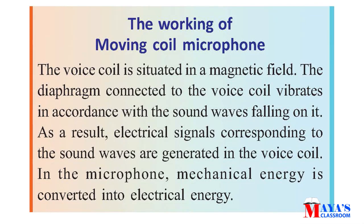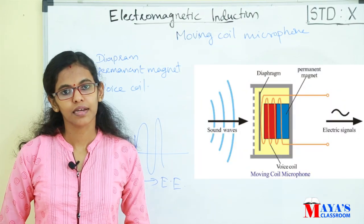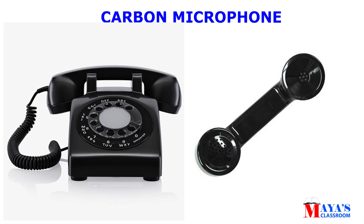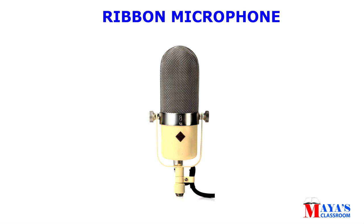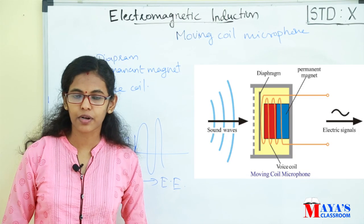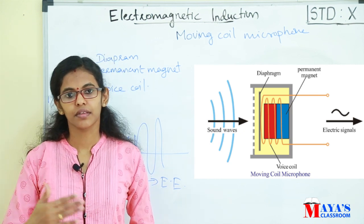Moving coil microphone — working: The voice coil is situated in a magnetic field. The diaphragm connected to the voice coil vibrates in accordance with the sound falling on it. As a result, electrical signals corresponding to the sound are generated in the voice coil. In the microphone, mechanical energy is converted into electrical energy. The electromagnetic induction principle is used.